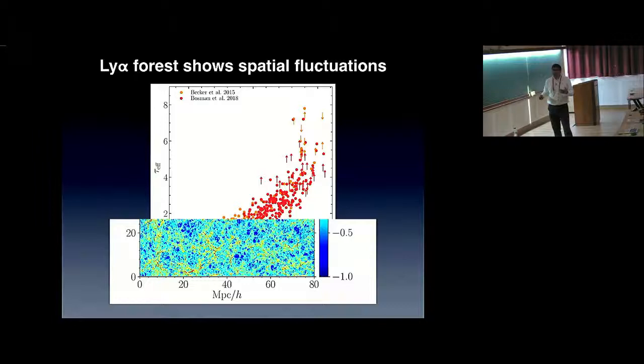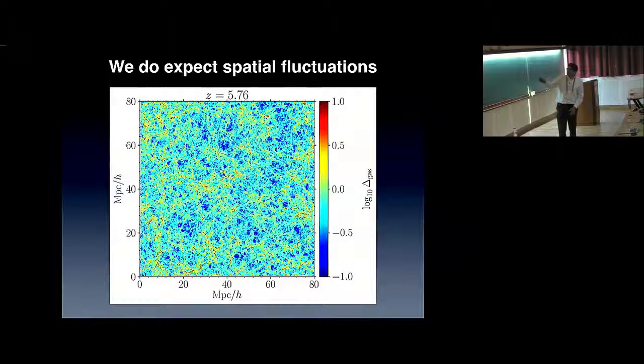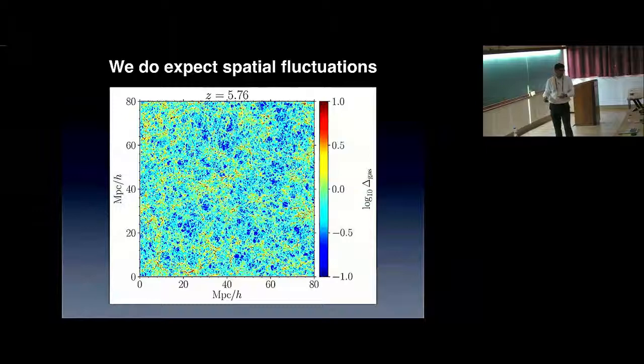Spatial fluctuations in themselves are not necessarily surprising. We do expect some spatial fluctuations because the universe is not perfectly homogeneous, it is only statistically homogeneous. We have density fluctuations. This is a slice from a simulation at redshift 5.76, roughly the same redshift at which I showed data. But what's interesting is that these density fluctuations do not explain the Lyman-alpha opacity fluctuations that I showed on the previous slide.